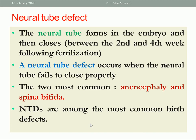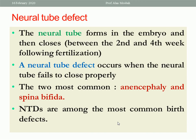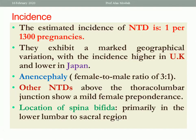Neural tube defects are among the most common birth defects. The incidence is 1 in 1,300 pregnancies. They exhibit marked geographic variation — it is higher in the UK while it is lower in Japan.